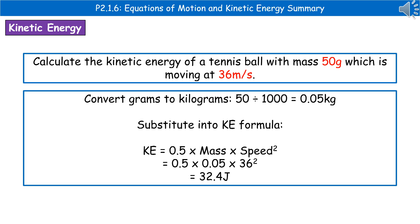Then we can substitute that into our kinetic energy formula, which was 0.5 times mass times the speed squared. So 0.5 times our mass of 0.05 times by our speed, 36 squared. Gives us an overall answer of 32.4 joules.